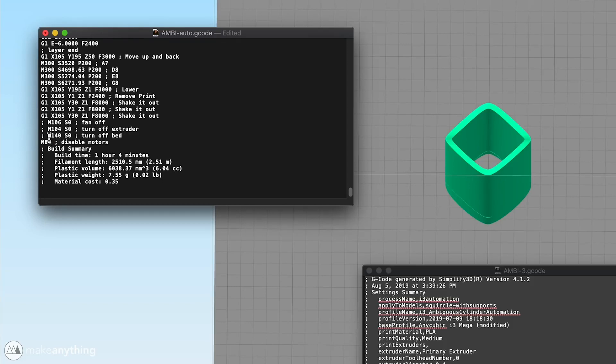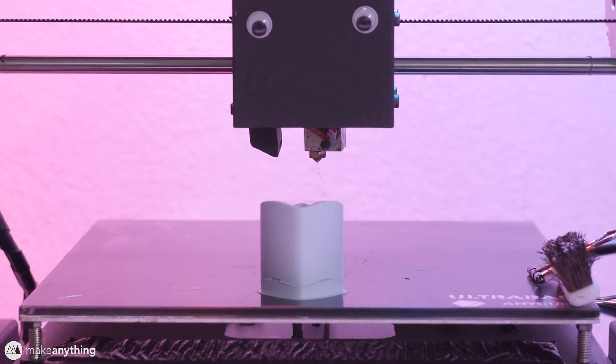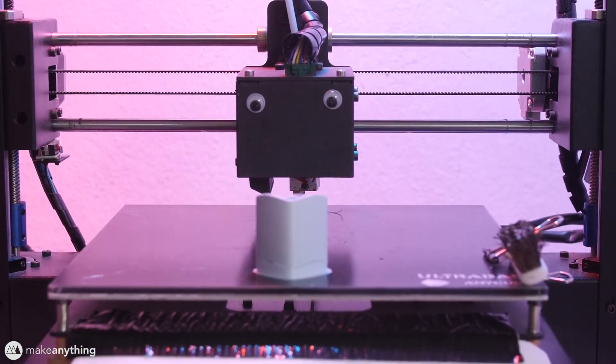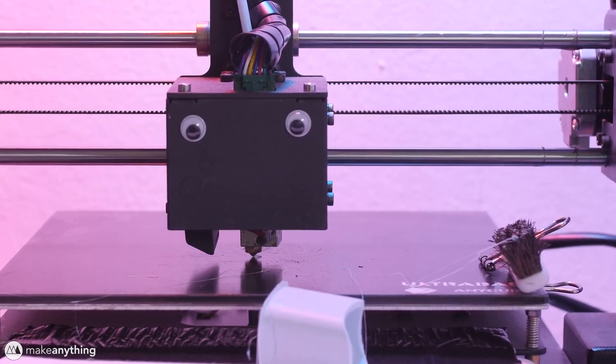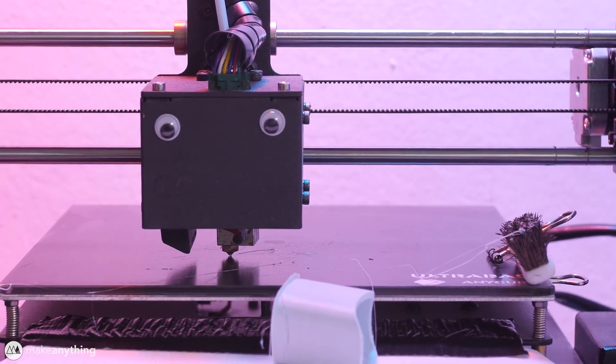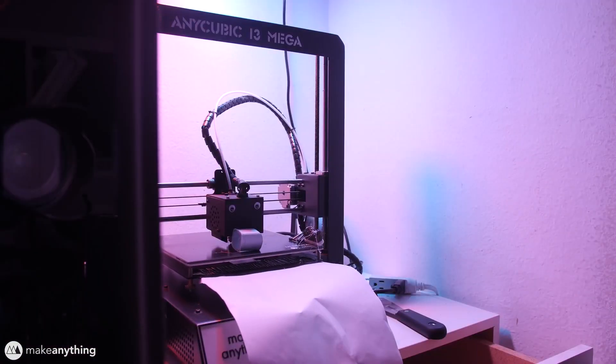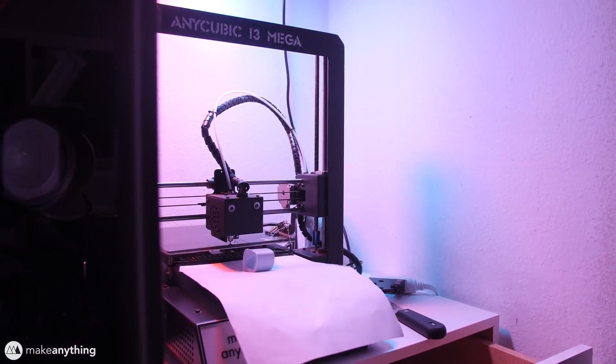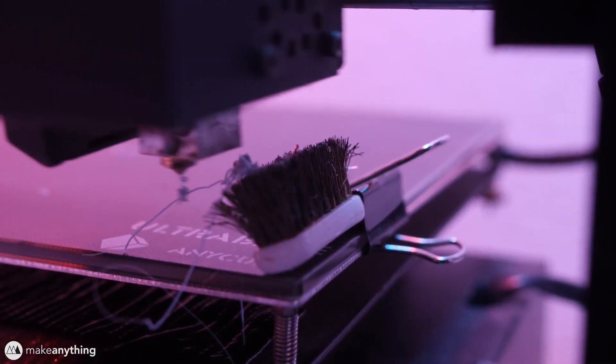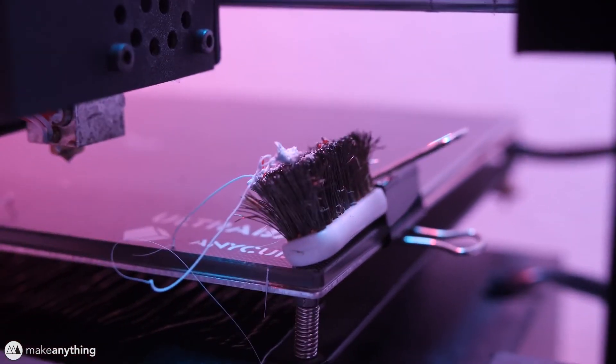Devin modified his G-code to direct the print head to knock the completed print off the bed and proceed directly to printing another copy of the model. I'm not brave enough to try this myself, but it's a creative G-code modification that I haven't seen before and it's so satisfying to watch it in action.